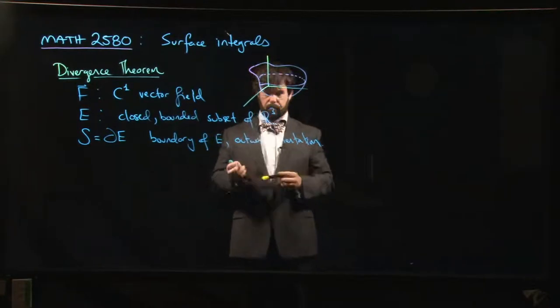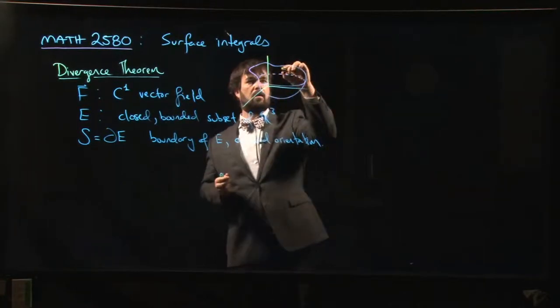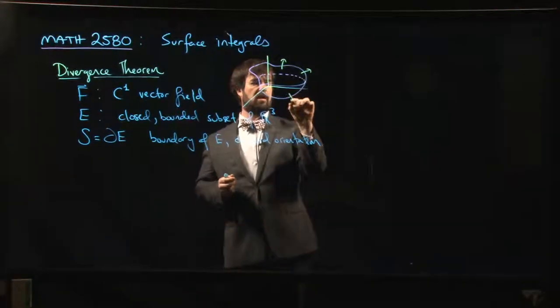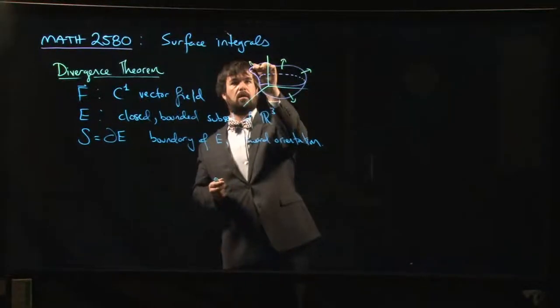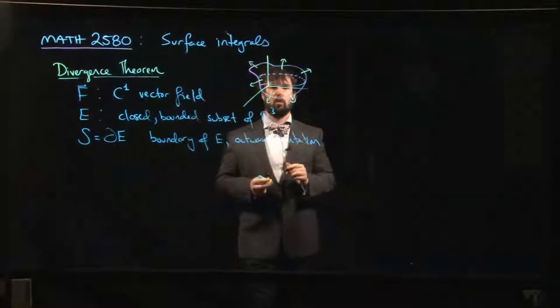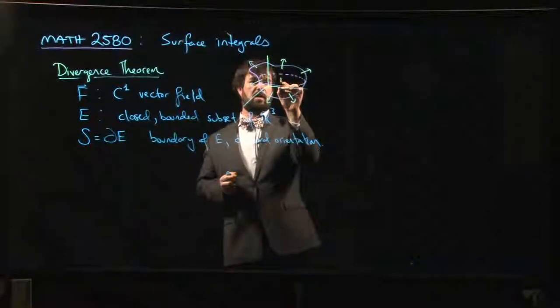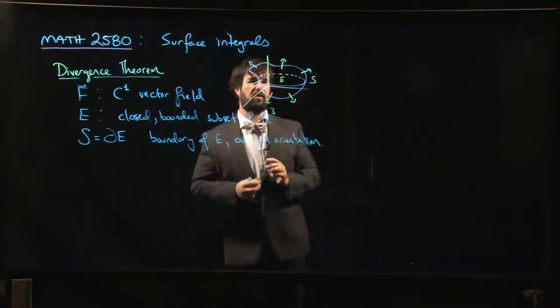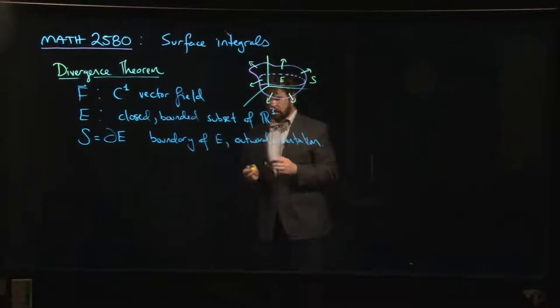And the boundary is oriented everywhere with the outward pointing normal vector, right? So E is on the inside, S is the boundary of E, okay?